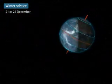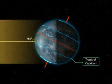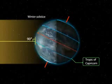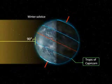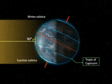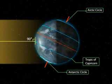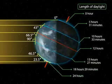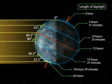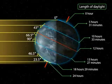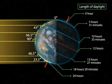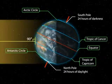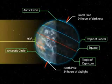Winter solstice: On the 21st and 22nd of December, the overhead Sun is over the Tropic of Capricorn, which receives the largest amount of solar radiation. On this day, the northern hemisphere is in the winter solstice, while the southern hemisphere is in the summer solstice. The angle of the Sun decreases towards the poles. The length of daytime in the northern hemisphere is the shortest in the year, while that of the southern hemisphere is the longest. There are 24 hours of darkness at the Arctic Circle and 24 hours of daylight at the Antarctic Circle.